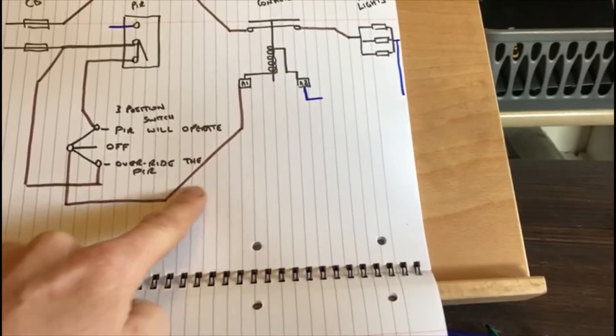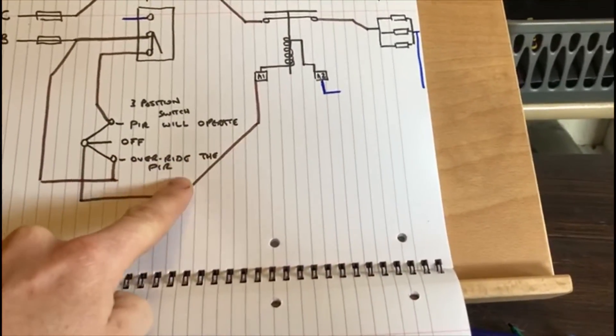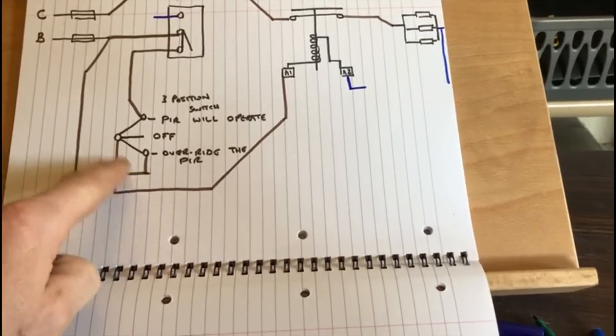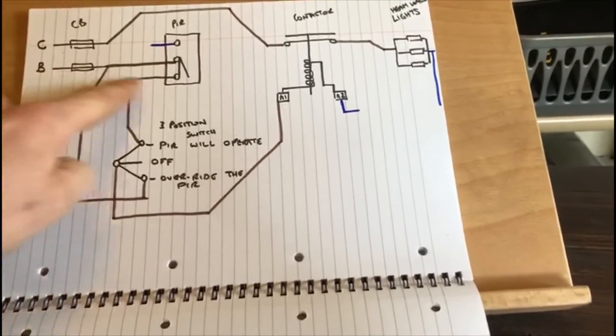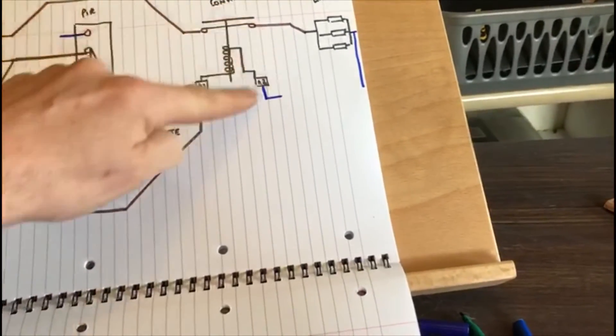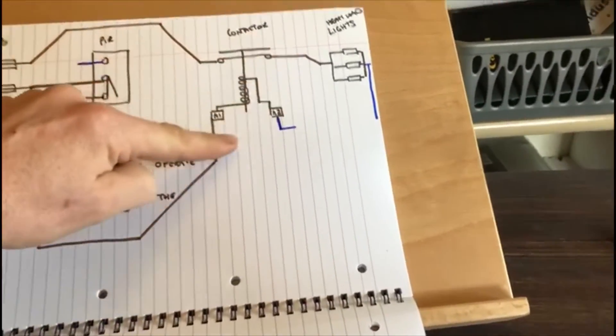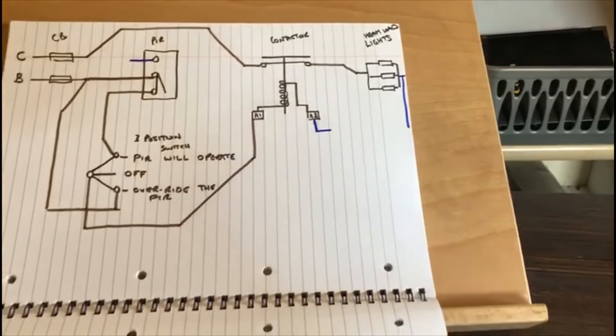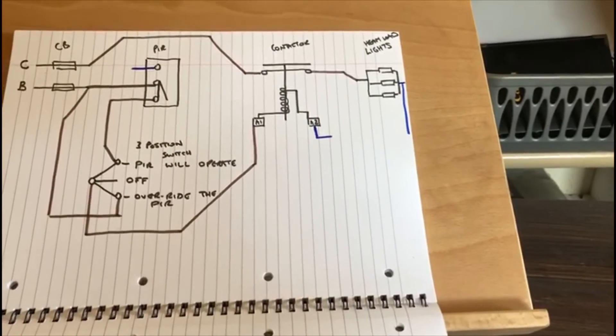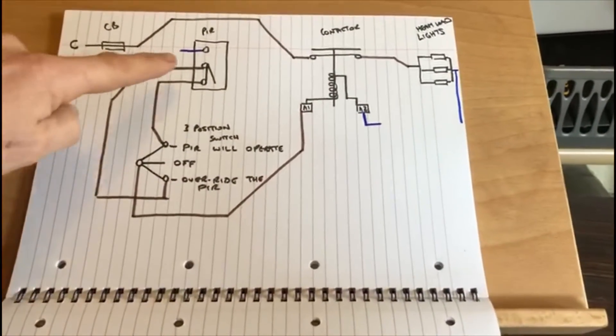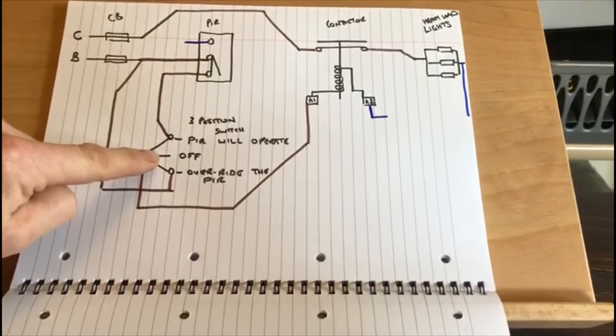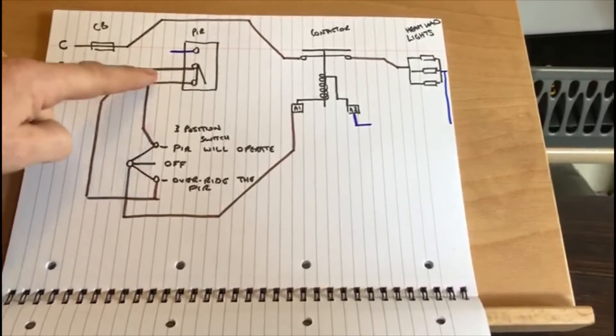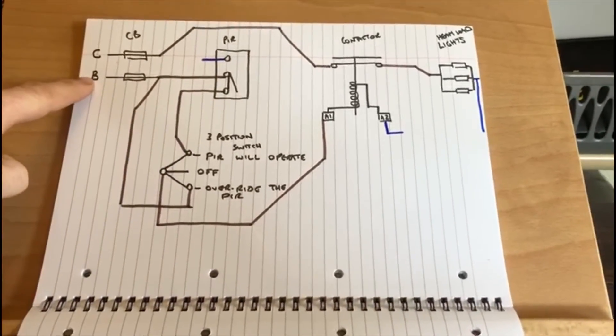So if we're working on this coil, if we're working on the contactor, it's very important that that's labeled up correctly. The PIR and the switch, they only have the one type of, they only have the B type breaker supplying them so they're not a problem to work on.